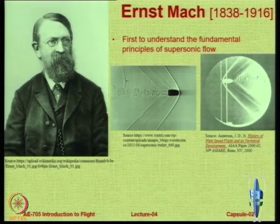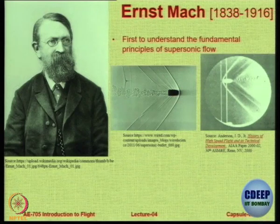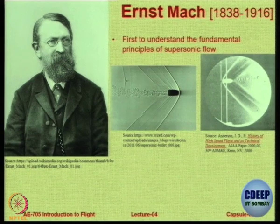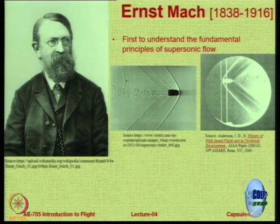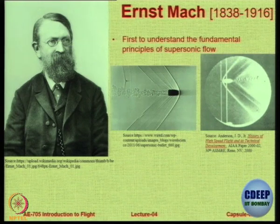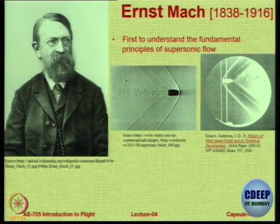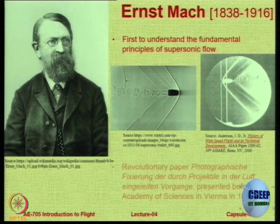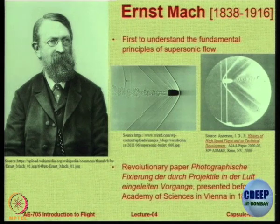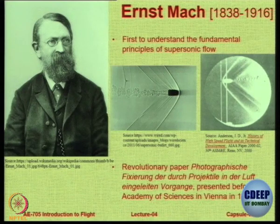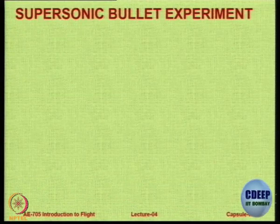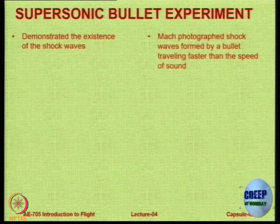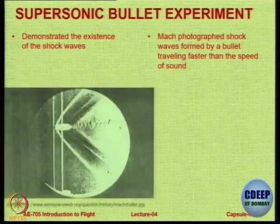On the left hand side you have a more recent photograph of a bullet taken using the technique of Schlieren photography. Here you do not see those two vertical lines. This particular photograph is much clearer but fundamentally it is the same — both photographs are trying to capture the flow field around a bullet. This particular photograph by Mach was presented in a very outstanding paper dated 1887, when he was able to study and show the existence of shock waves.